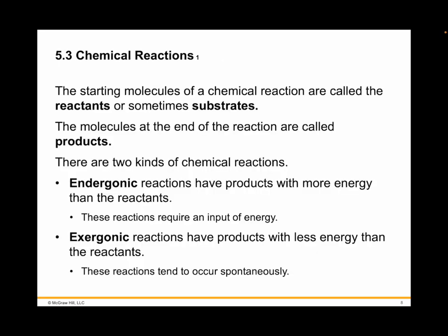Now, chemical reactions. You'll differentiate between endergonic and exergonic reactions. A chemical reaction is a process that changes molecules to form different molecules. The original molecules before the reaction are called reactants, or substrates, whereas the molecules that result after the reaction are called products. Not all chemical reactions are equally likely to occur — just as a boulder is more likely to roll downhill than uphill, a reaction is more likely to occur if it releases energy than if it needs energy supplied.